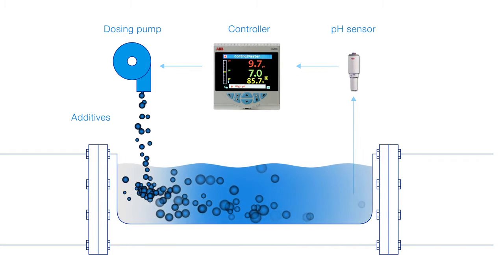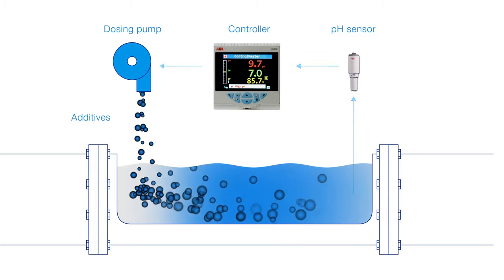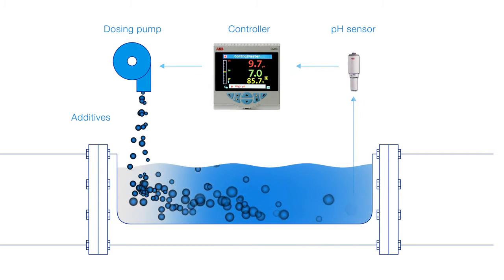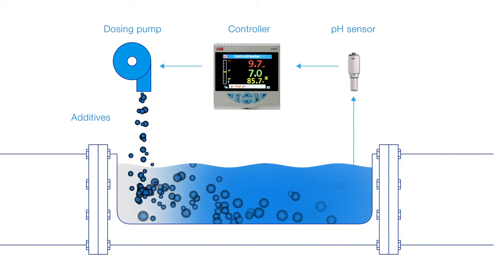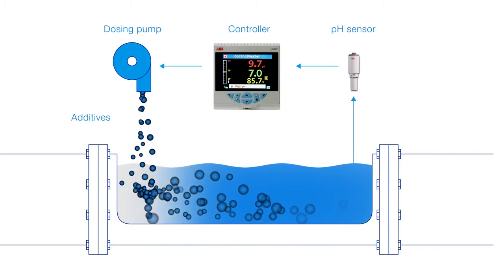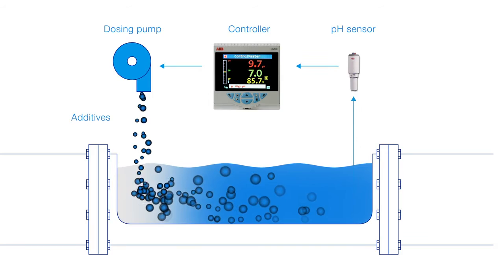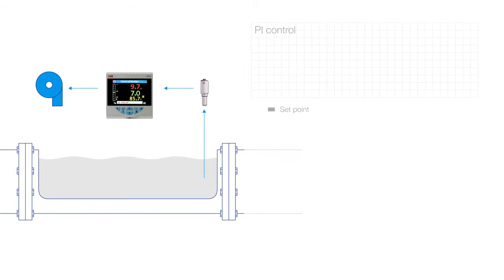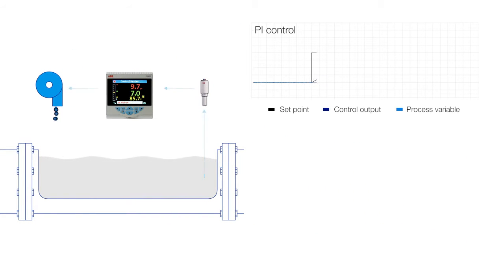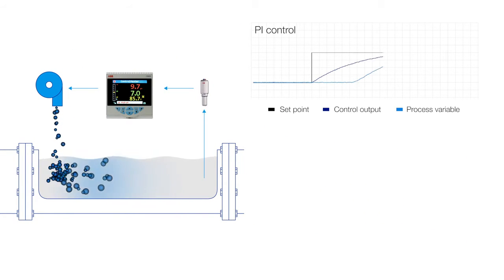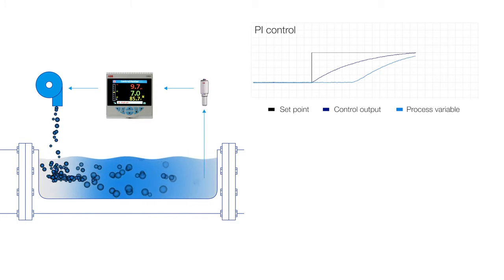The resultant reaction time, or dead time, makes control of additive dosing difficult to achieve, and the use of a standard PI controller typically results in unstable or slow responding control.